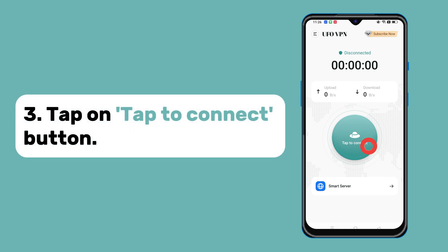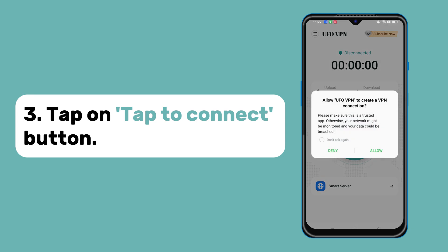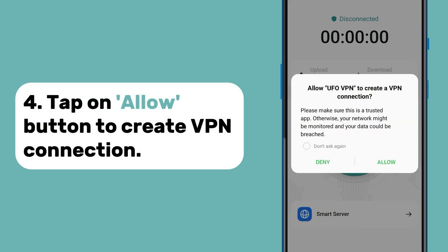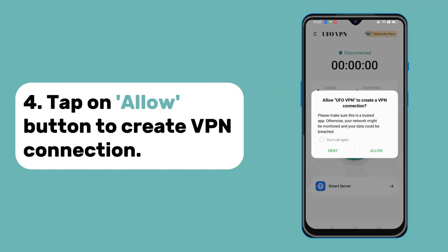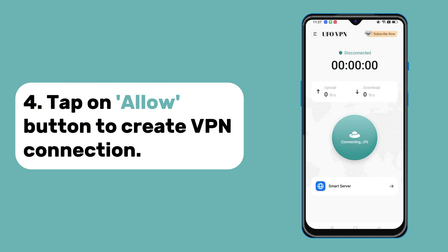Third, tap on the connection button on the screen. Then tap on the allow button to create a VPN connection. This step is the same on any VPN app installed on your Android device.